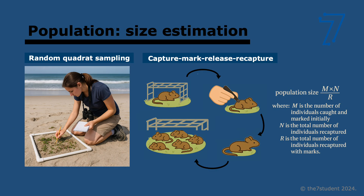So how do we estimate the size of a population? It's normally impossible to count every single individual, so we normally have to do random sampling, where you take a small portion of the population. If it's random, every member of the population has an equal chance of being selected.